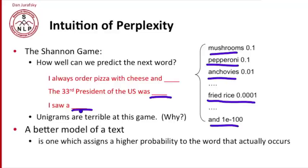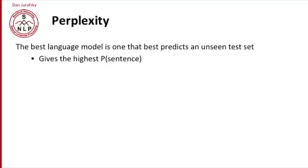In summary, a better language model is one that assigns a higher probability to whatever word actually occurs. If you can guess the next word correctly, you are a good language model. The best language model is one that best predicts an unseen test set — or assigns, on average, the highest probability to all the sentences it sees. Given a new test set, the better language model is the one that says 'I knew that sentence was coming' and assigns it a very high probability.